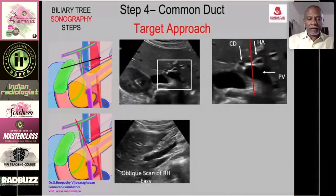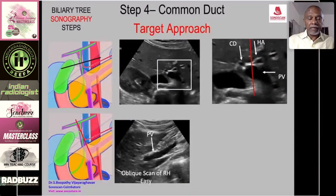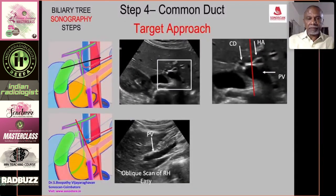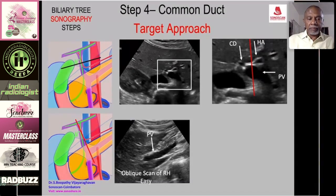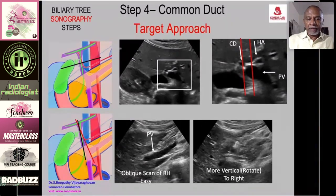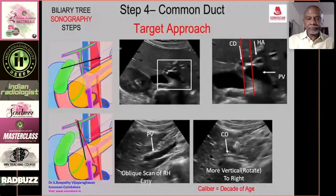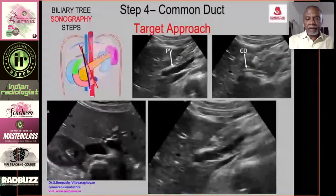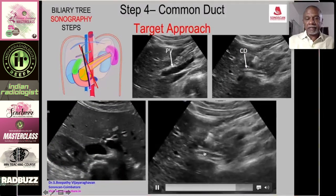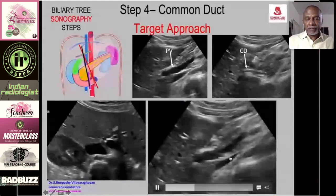To apply the target approach: take an oblique scan of the right hypochondrium to get the long axis of the portal vein, then using the anatomical relationship — the common duct is anterior to the portal vein and slightly to the right — make the transducer more vertical and move slightly to the right. This brings the long axis of the common duct into view. This technique is called the target approach.